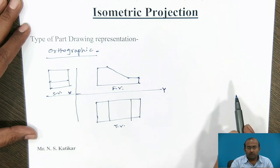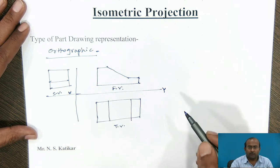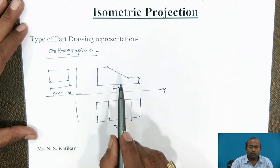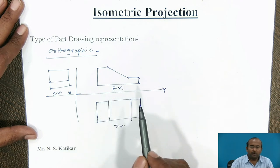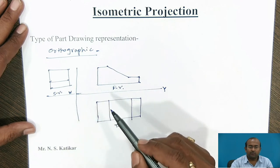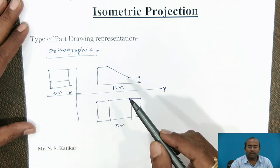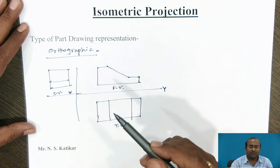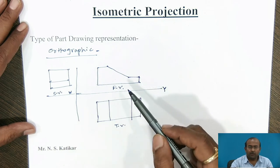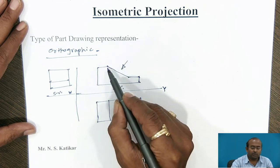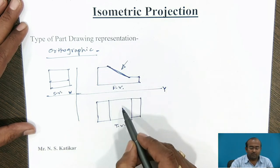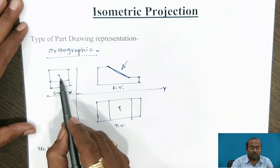We are going to observe the part geometry in its true shape. But in the orthographic view, what is the limitation? The limitation is that each sub-view only shows true shape if the geometry is parallel to the reference plane. If the geometry is inclined, you can imagine that the true shape of this edge is not visible in this view, and this edge is not visible in this view either.